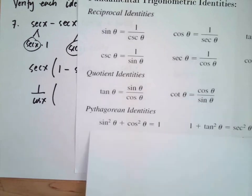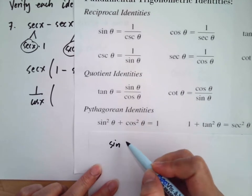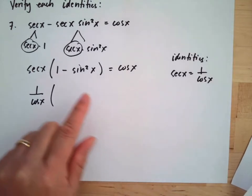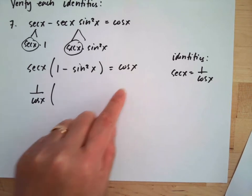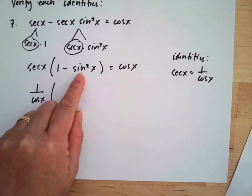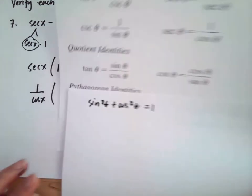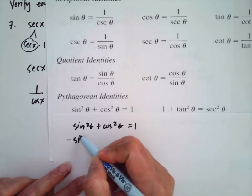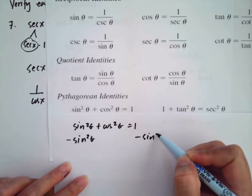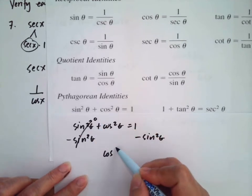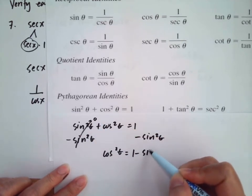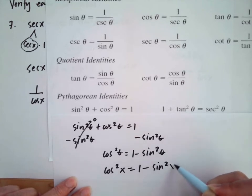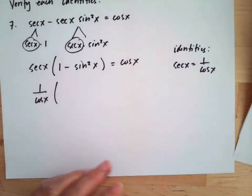We need to replace the sine squared term because the goal is to have only cosine remaining. We use the Pythagorean identity: sine squared theta plus cosine squared theta equals one. Subtracting sine squared theta from both sides gives us cosine squared theta equals one minus sine squared theta, so cosine squared x equals one minus sine squared x.